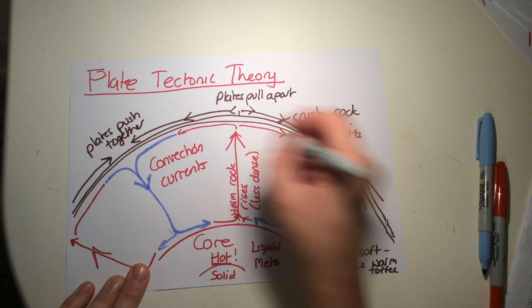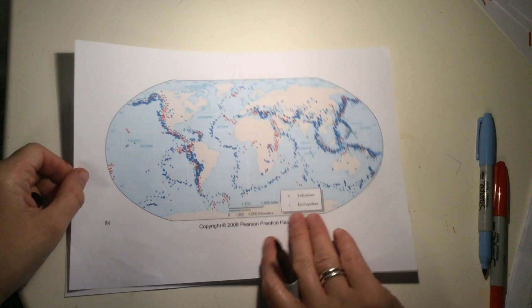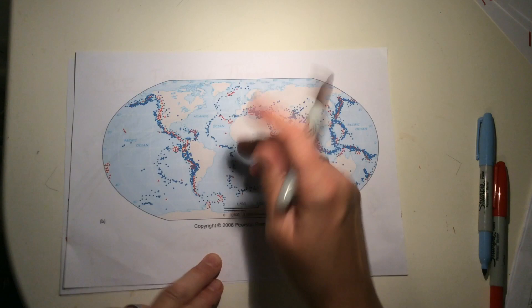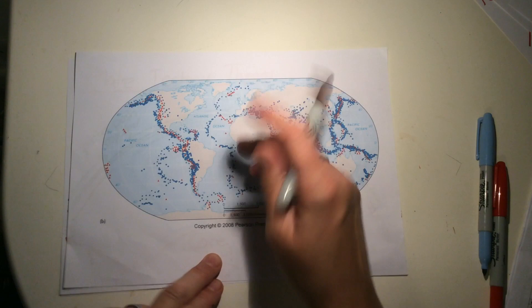These locations—here, here, here—this is where all the action is happening. If we go back to that map, these are the places where we see earthquakes and volcanoes at the edge of these boundaries. And that is the plate tectonic theory.